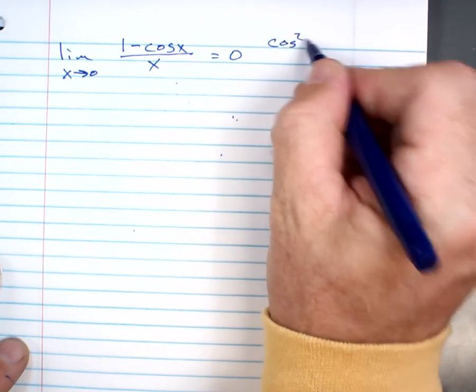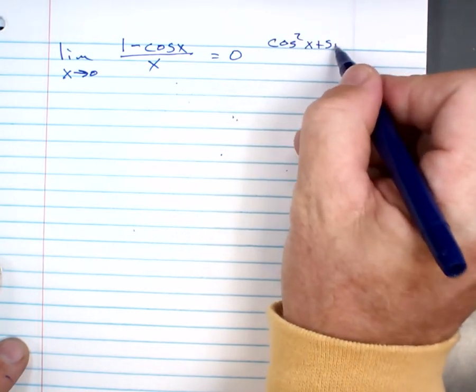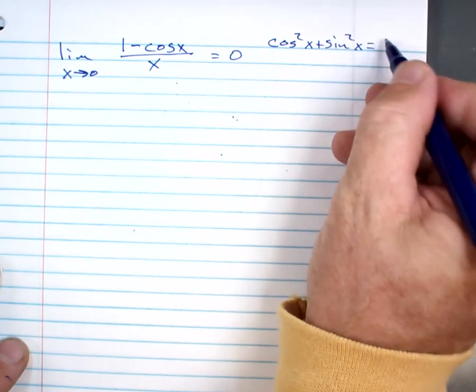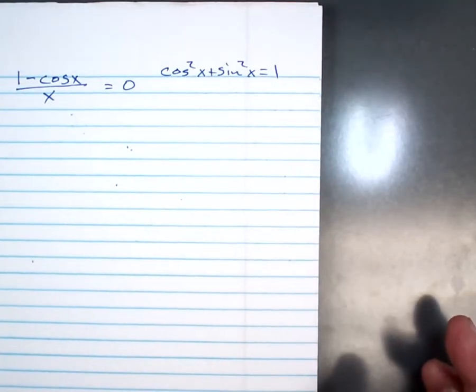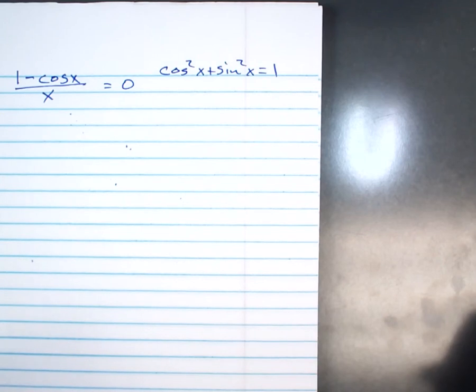Cosine squared x plus sine squared x equals 1. And I don't know if Mr. Karsh or Mrs. Tambel showed you last year, but that comes from the Pythagorean theorem. Did you know that?